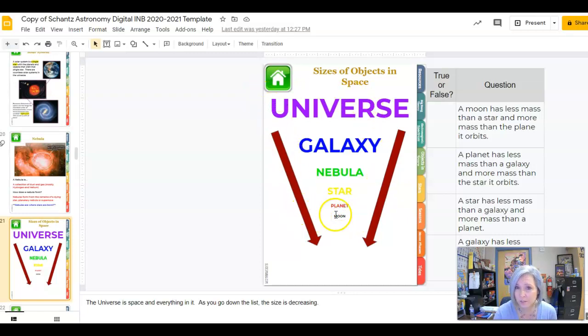That's the relative size of objects going from largest at the top to smallest at the bottom. Use this information to help you answer these questions on the side. Decide if the statement is true or false based on these relative sizes.